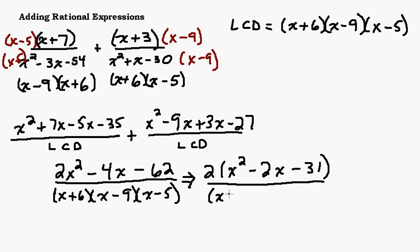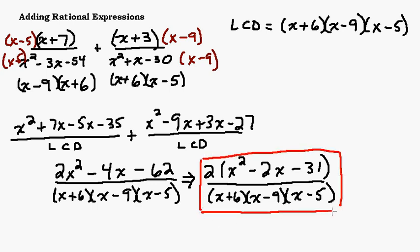Now I want to look at what's left in the parentheses in the numerator and ask myself if that's going to factor. I've got a 1 in front of the x squared, so I can ask myself, does anything multiply to be negative 31 and add to be negative 2? I don't know if you recognize it, but 31 is a prime number. The only thing that multiplies to be 31 is 1 and itself. So certainly nothing is going to multiply to be 31 and add to be 2. So we've verified that this cannot be reduced, and therefore we have our answer.